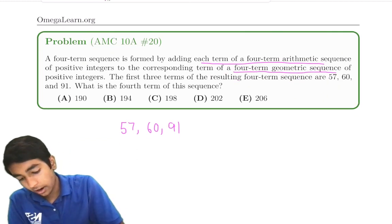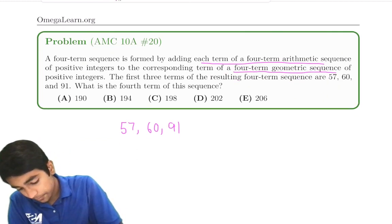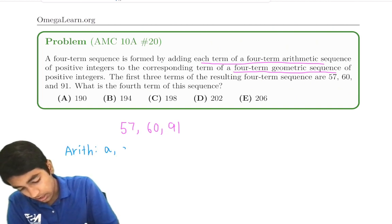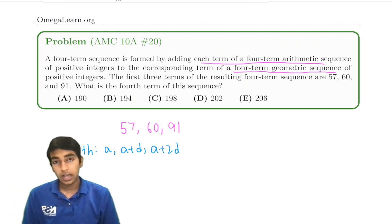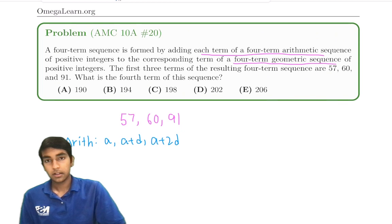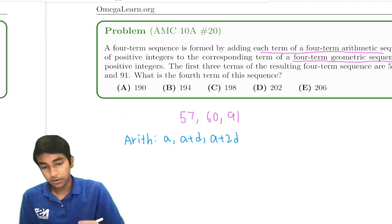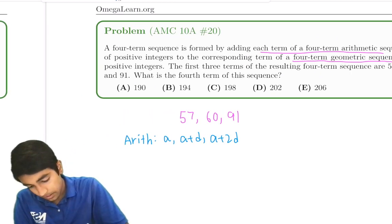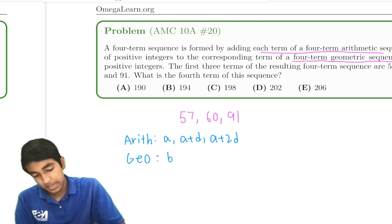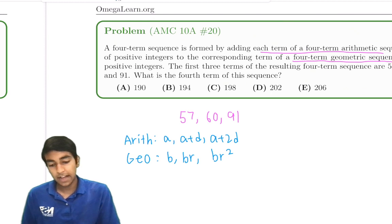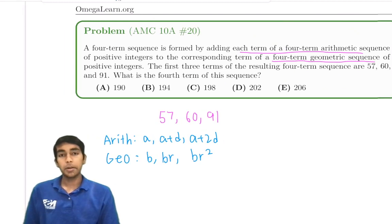Let's say that our arithmetic sequence is a, a plus d, and a plus 2d. And let's say our geometric sequence is b, br, and br squared, because they have a common ratio and common difference.